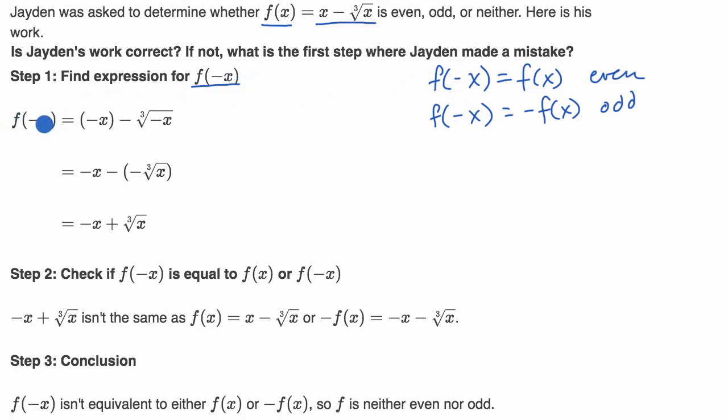So he tries to evaluate f(-x), and when he does that, everywhere where he sees an x in f(x), he replaces it with a negative x. So that seems good. And then let's see, this becomes a negative x, that makes sense, minus.